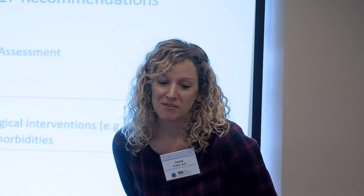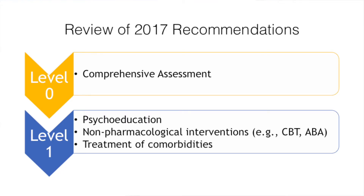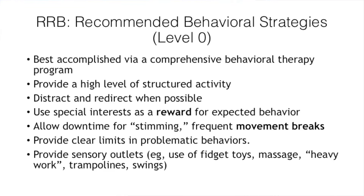We do not have a lot of recommendations here. We came up with a level zero and a level one. Our level one is around education, trying non-medication interventions first — things like cognitive behavior therapy or ABA — and treating any comorbidities associated with them.